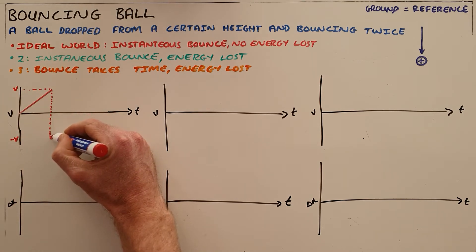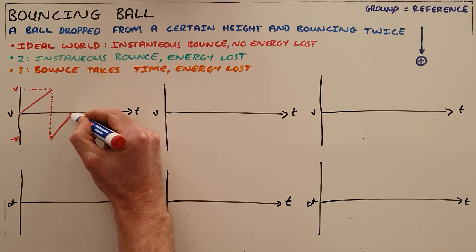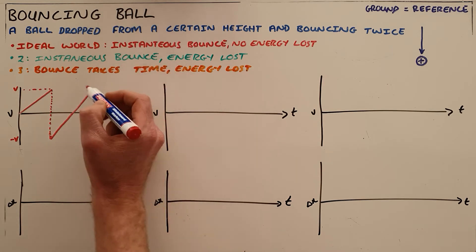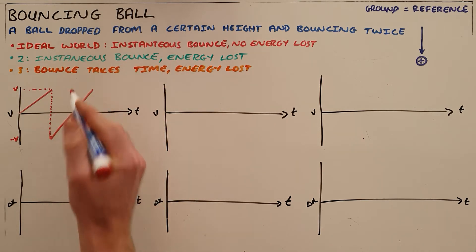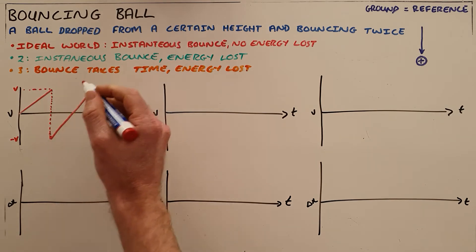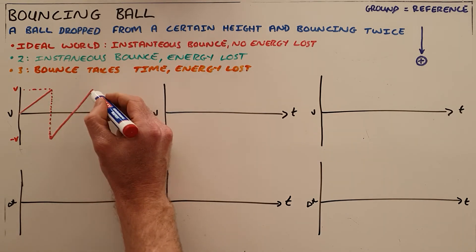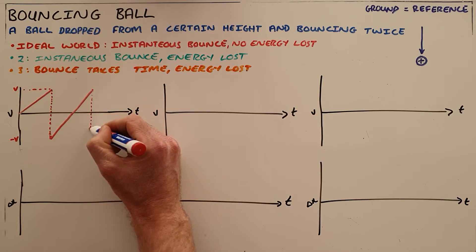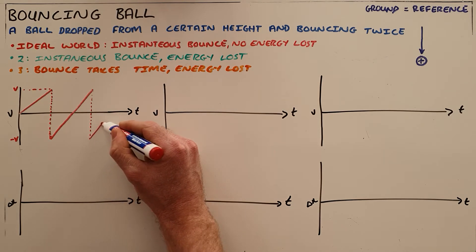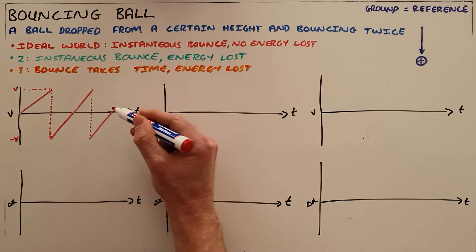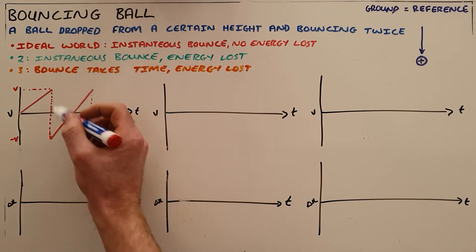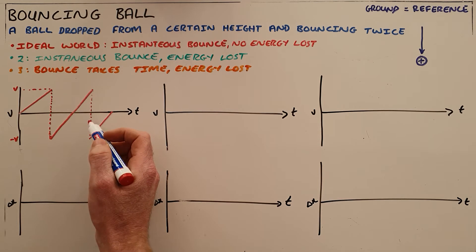Once it leaves the ground it continues as a projectile, meaning acceleration is constant. It reaches its maximum height — note that the velocity is temporarily zero at its maximum height — and then falls down until it hits the ground again. It reaches the same initial velocity because no energy has been lost. The dotted line again represents the bounce, and as stated, the ball reaches its maximum height before being caught after its second bounce. The dotted lines represent the bounces, so we can see it has bounced twice.